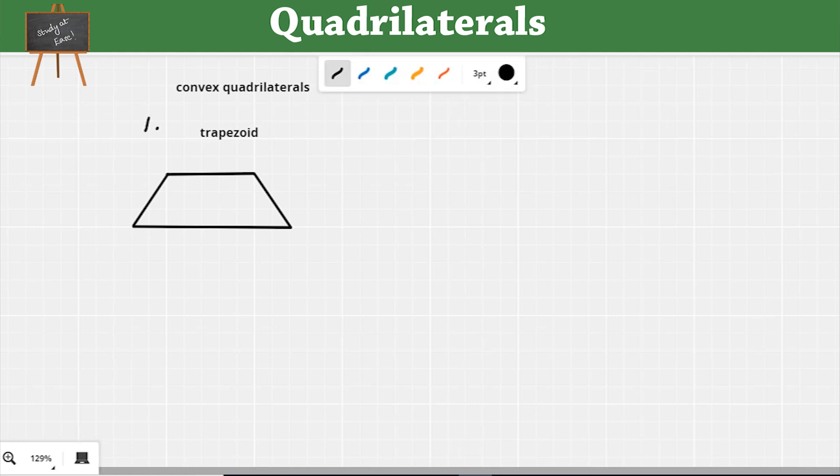The first one, a trapezoid. A trapezoid is otherwise called as a trapezium. Now in the case of a trapezoid, you can see that there is one pair of parallel sides and these parallel sides are called as a base. The other two non-parallel sides are called as the legs. So in a trapezoid, we have one pair of parallel sides. The second one is a parallelogram.